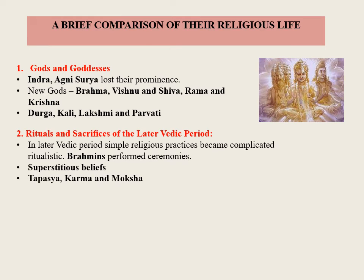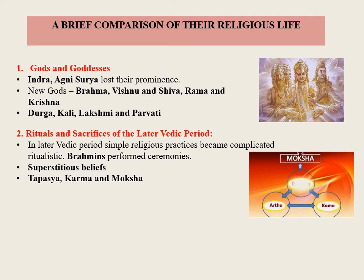Rituals and Sacrifices of the Later Vedic Period: The simple religious practices became complicated and ritualistic. Sacrifice became the most important part of their religion, and the ceremonies could be performed only by Brahmins, who were given prominent positions in society. Many superstitious beliefs in spirits, spells, and charms became part of their religion. Practice of tapasya or penance occupied an important place. They believed in the principles of karma (action) and moksha (salvation).